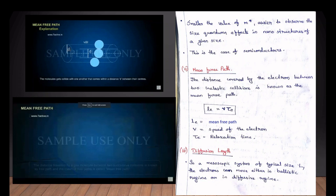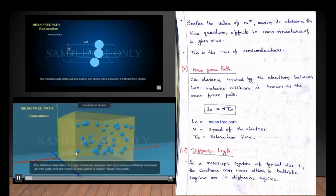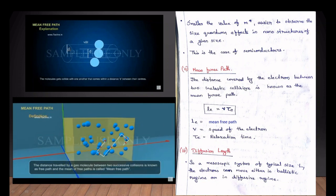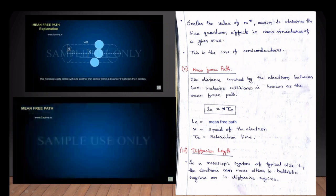This electron travels a distance in a free path. A distance covered by an electron between two inelastic collisions is known as the mean free path. We will travel a free distance until the inelastic collision.